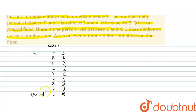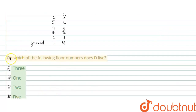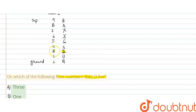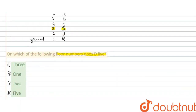यहाँ पर जो हमें arrangement obtain हुआ है वह correct arrangement है। देखते हैं question में पूछा हुआ है: on which of the following floor numbers does D live? D is living on the 3rd floor, so option A — 3 — is the right answer. Hope you like this video, thank you.